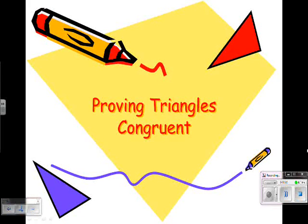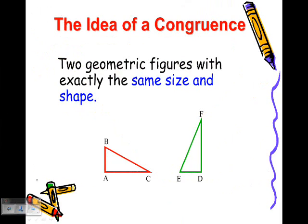In this video, we'll be looking at two ways that we can prove triangles congruent. Instead of just looking at all the angles and sides, we're going to learn two quick ways to show it. The idea of congruency is simple: two geometric figures with exactly the same size and the same shape. It doesn't matter how they're rotated, it just matters that their size and shape is the same.